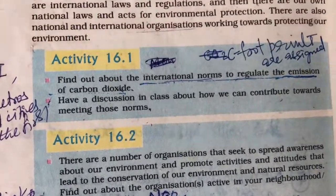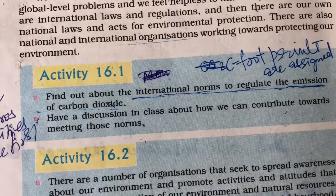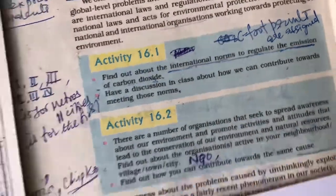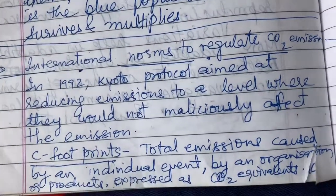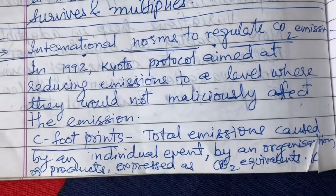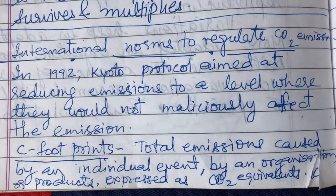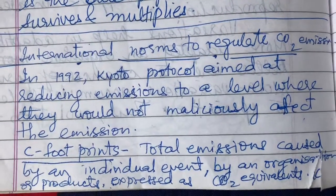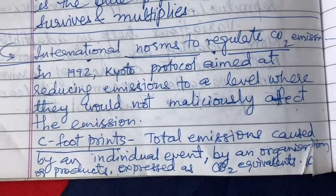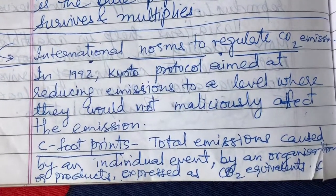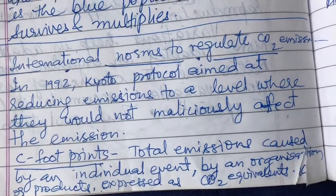As per the book, there is an activity: find out the international norms to regulate the emission of carbon dioxide. In 1992, the Kyoto Protocol aimed at reducing emissions to a level where they would not maliciously affect the climate. We measure this as carbon footprints — the total emission caused by an individual, event, organization, or product, expressed as CO2 equivalence.